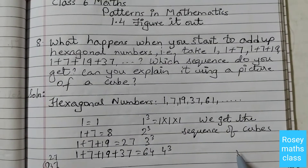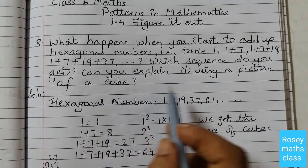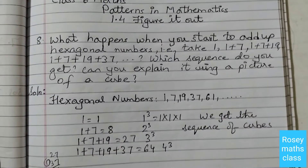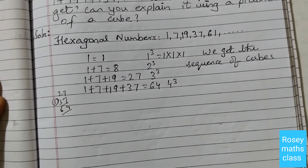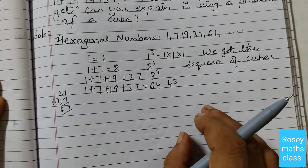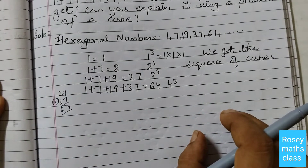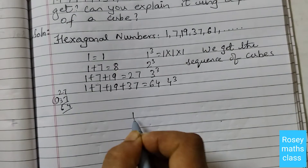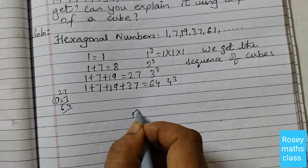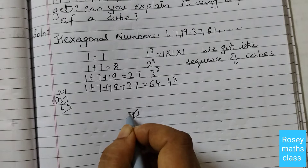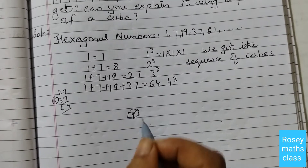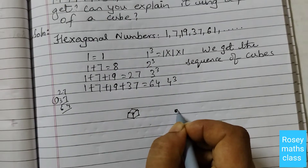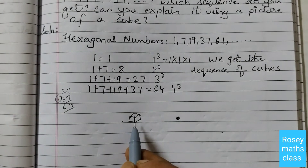We get the sequence of cubes. Can you explain it using a picture of a cube? Yes, we can. For that, you need to draw cubes on one side and on the other side show the hexagonal numbers. First, we can draw a cube — it's very easy to draw. One dot represents one cube.